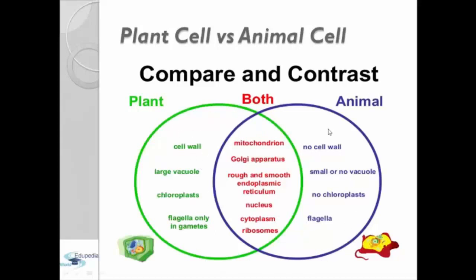here we have the compare and contrast of both cells, plants and animal. Both plant and animal cells have mitochondrion, Golgi apparatus, rough and smooth endoplasmic reticulum, nucleus, cytoplasm and ribosomes.